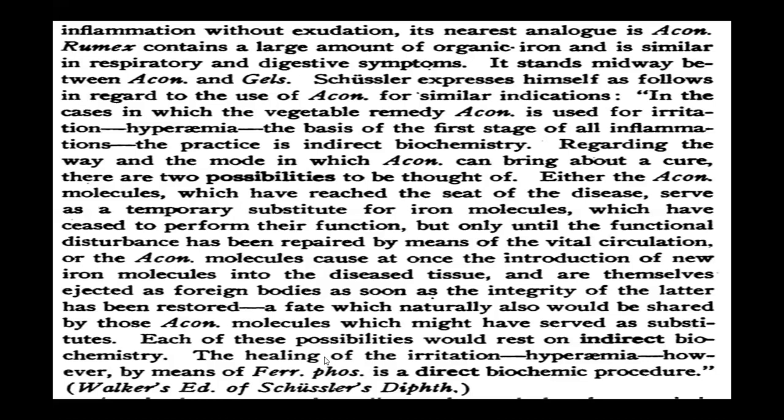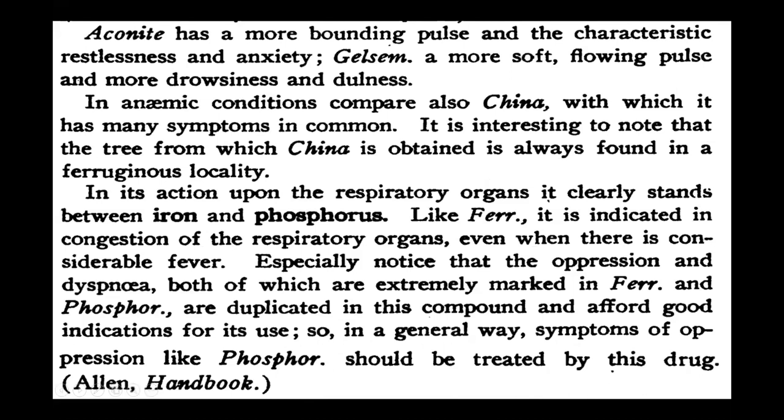Both possibilities rest on indirect biochemistry. But healing the irritation and hyperemia by means of Ferrum phos is a direct biochemical procedure. So in the first stage of acute inflammation — whether present in the throat, nose, or eyes — if you have Ferrum phos, give it and you can cure that first stage of inflammation without needing Aconite. Start with Ferrum phosphoricum and observe the results.